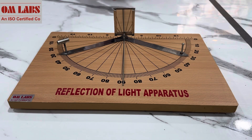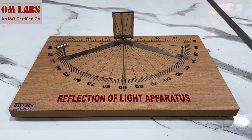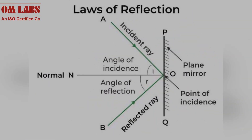As we know, there are two laws of reflection of light. The first law states that the incident ray, the reflected ray, and the normal to the surface of the mirror all lie in the same plane. The second law states that the angle of reflection is equal to the angle of incidence. Let's verify these two laws.